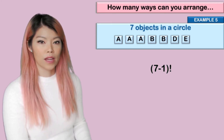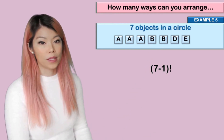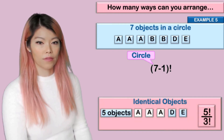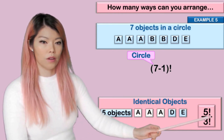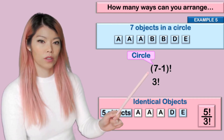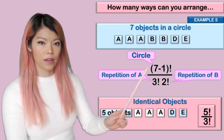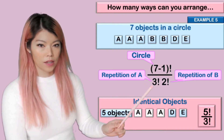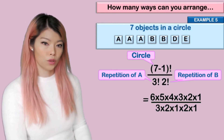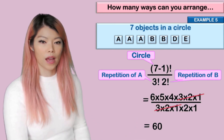Example five: how many ways can you arrange A, A, A, B, B, D, E in a circle? We have seven objects in a circle, so (7 − 1) factorial. But there are three identical A's and two identical B's, so we divide by three factorial and by two factorial. That gives us six factorial over three factorial times two factorial. The calculation simplifies — four cancels with two to give two, so two times six times five equals 60.